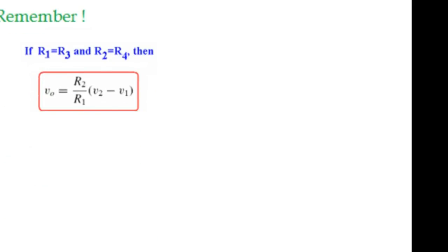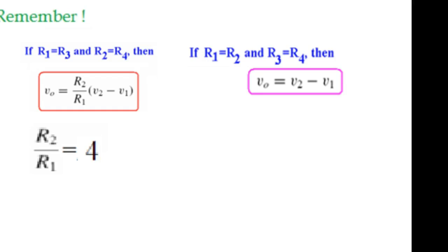Okay, this is another example. We have to design a difference amplifier with gain 4. Now, remember we had learned two conditions. Now, this was condition when R1 is equal to R3. In this case, we get a gain given by R2 over R1. But in the other case, when R1 is equal to R2, there was no gain. It is just the difference between the two. So,